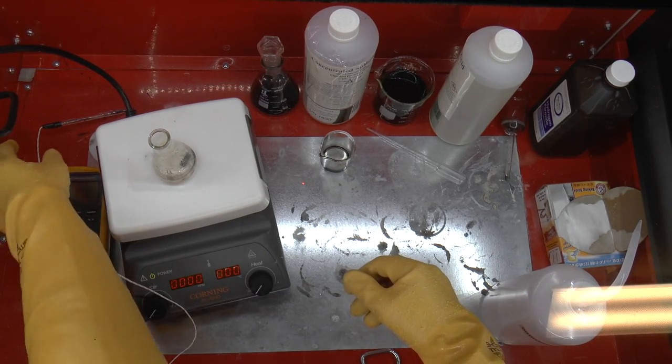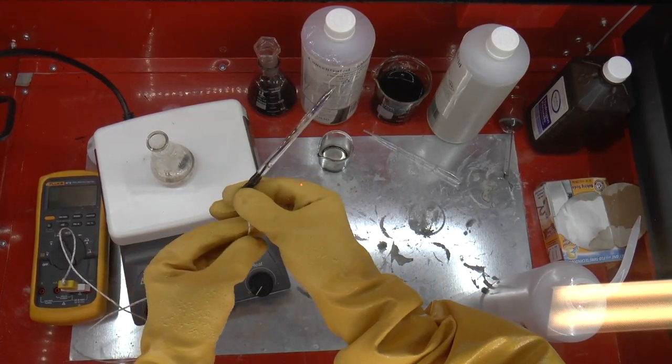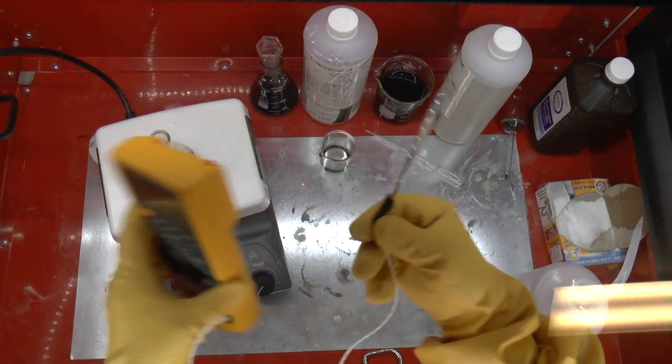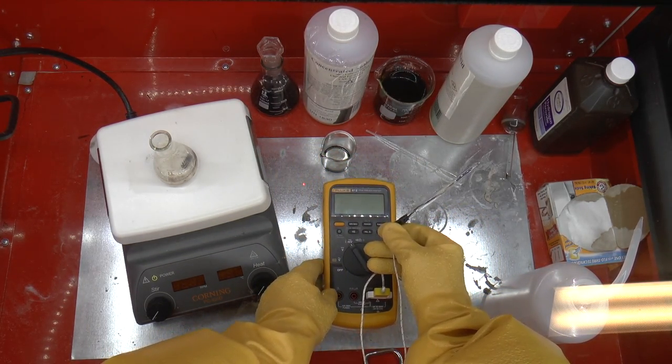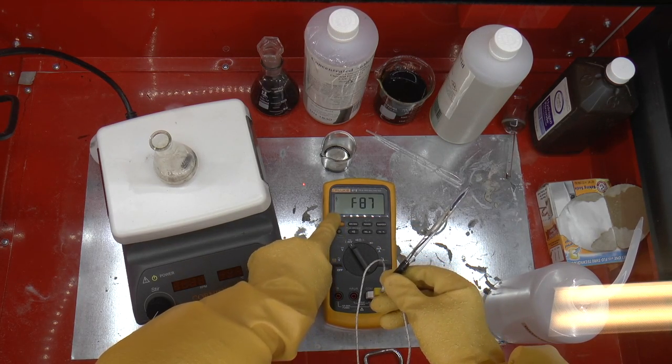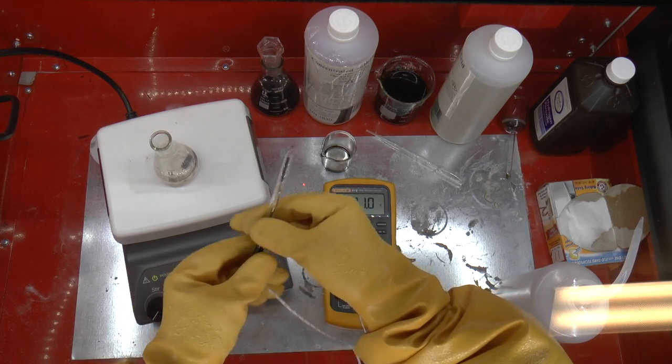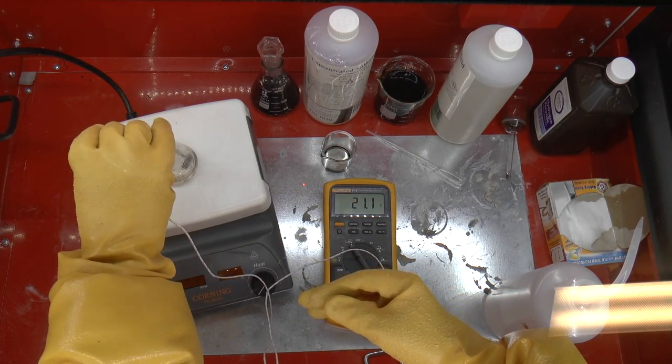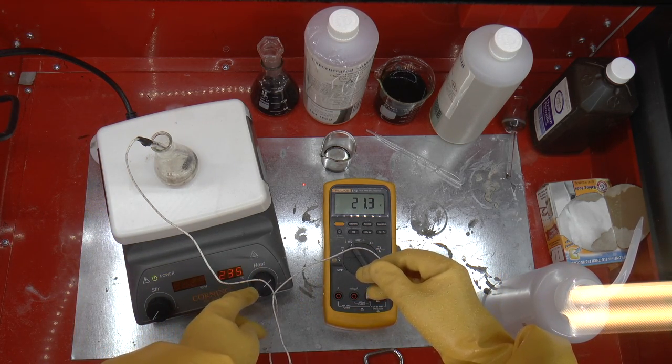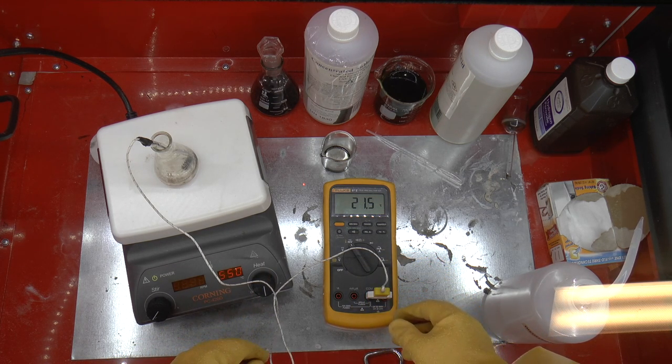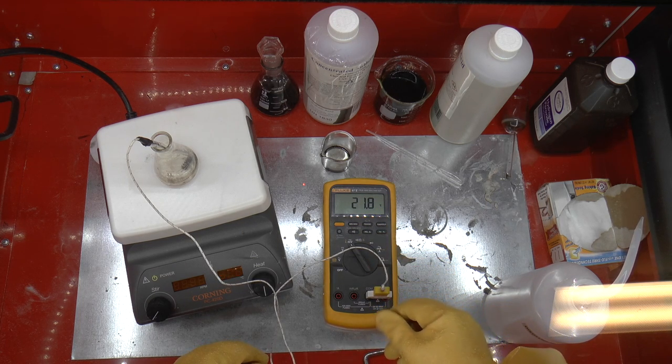I have this temperature probe that I made after the one featured in NerdRage. It's basically just a glass pipette with a thermocouple in it, and I've hooked it up to my Fluke multimeter. Now I'm measuring the temperature in Celsius. It's 21 Celsius. I'm going to put it in the beaker, turn on the hot plate all the way up, and go all the way up to 200 Celsius.